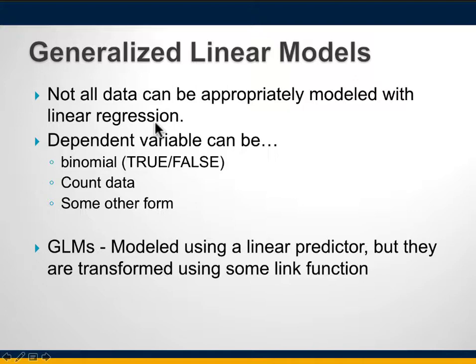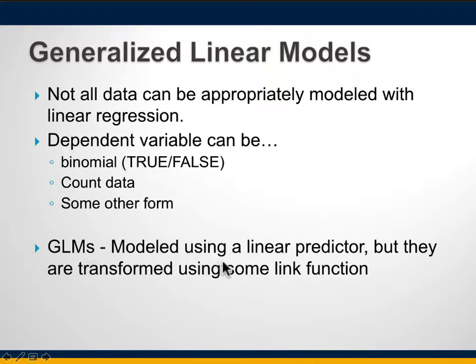For instance, if your dependent variable is binomial — like true or false — or if it's count data or some other form, you cannot apply linear regression directly. For these types of models we use generalized linear models, in which you use a linear predictor made up of your independent variables, and then your response is transformed using something called a link function.